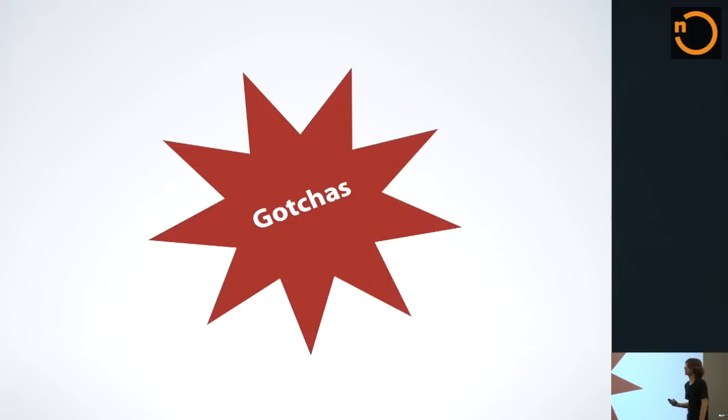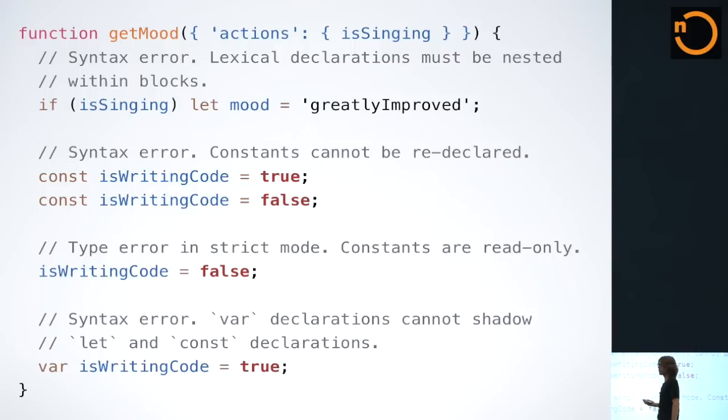Some gotchas with the syntax, though. Because blocks now have meaning, attempting to declare a let or const binding within an implicit block is a syntax error. They actually have to be nested within real blocks. The second example here is a syntax error because we're re-declaring the constant. If you try to reassign the value of a constant, it will silently fail in non-strict mode. In strict mode, it will throw an exception. Also, variable bindings with the var keyword have to be different from let and const bindings. You can't declare a variable and have it shadow a constant or a let declaration.